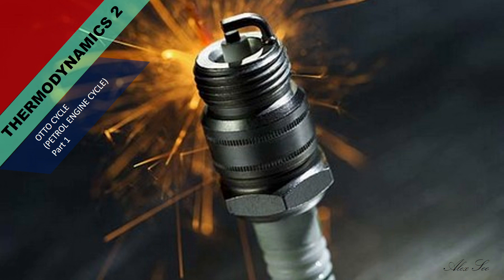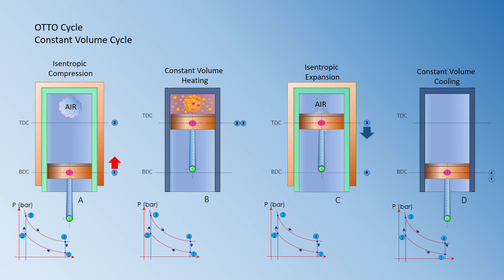The Otto cycle, also known as the petrol engine cycle, works on four different strokes: isentropic compression, constant volume heating, isentropic expansion, and constant volume cooling or heat rejection.